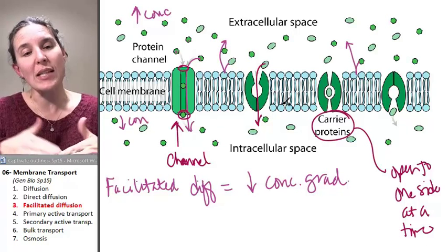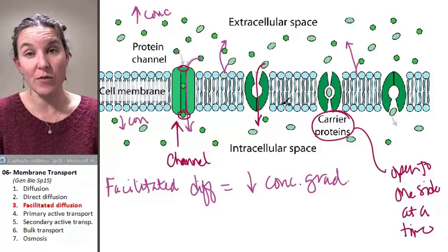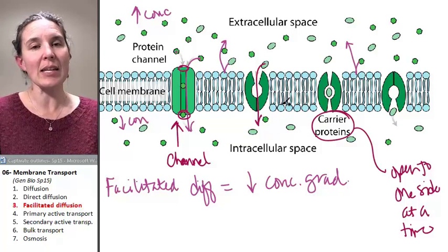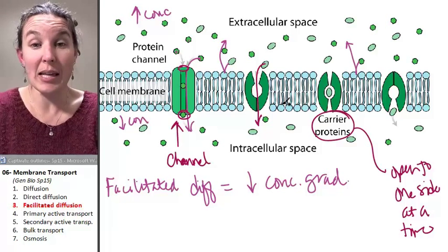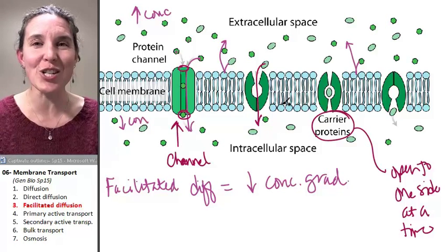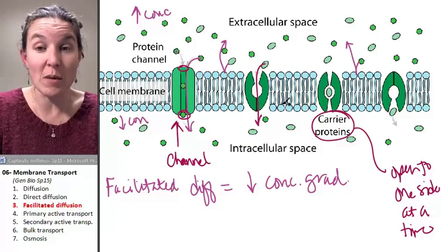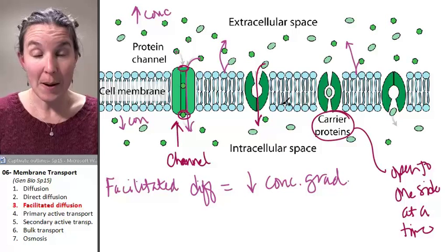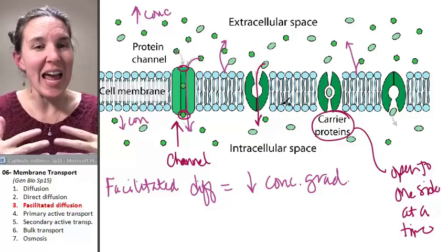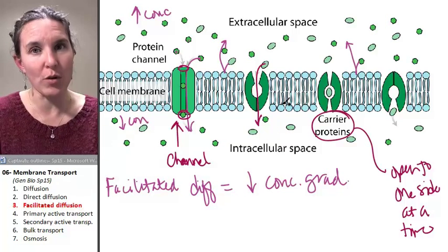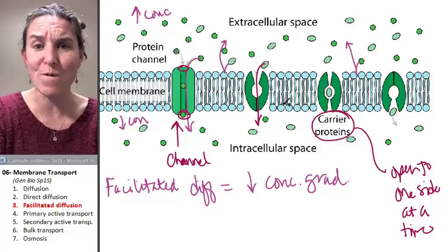So those are two examples of facilitated diffusion, keeping in mind that it doesn't require any energy to make this happen. It's just the energy of the random molecular motion. That's what fuels the movement of these particles. And they're going to do it. If they have a way through, they're going to move. It's kind of wild and it's kind of fast.